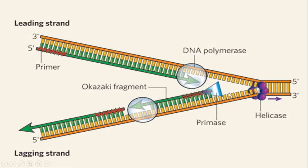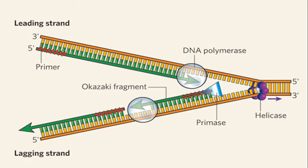The replication bubble has ends called replication forks. Then we have an enzyme called DNA Polymerase. DNA Polymerase synthesizes a new strand. DNA Polymerase 3 is the main enzyme that provides a new strand of DNA by adding nucleotides at the 3 prime end.